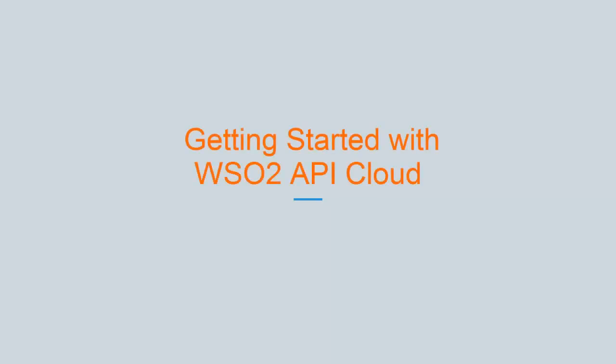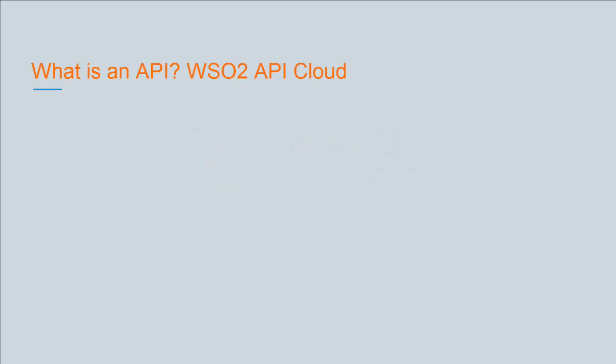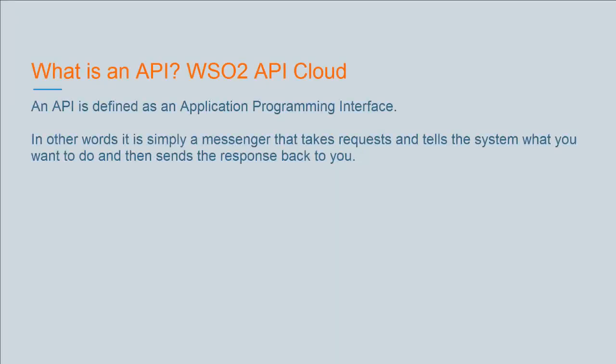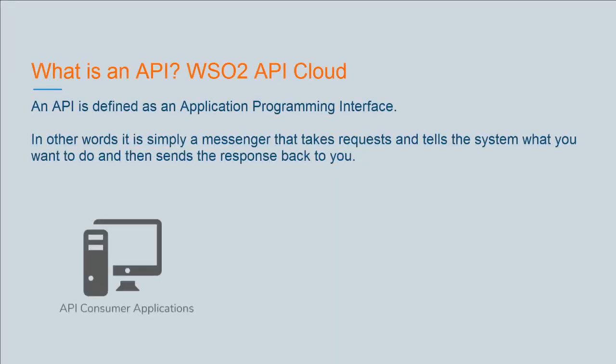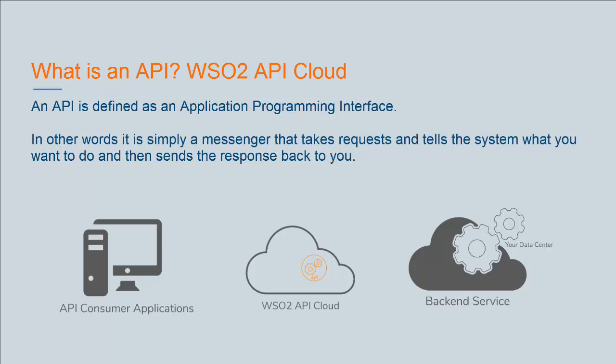Welcome to the WSO2 API Cloud Platform. This video is a simple guide to help you get started with creating and publishing APIs. An API is defined as an application programming interface. In other words, it is simply a messenger that takes requests and tells the system what you want to do, and then sends a response back to you. Let's get started.